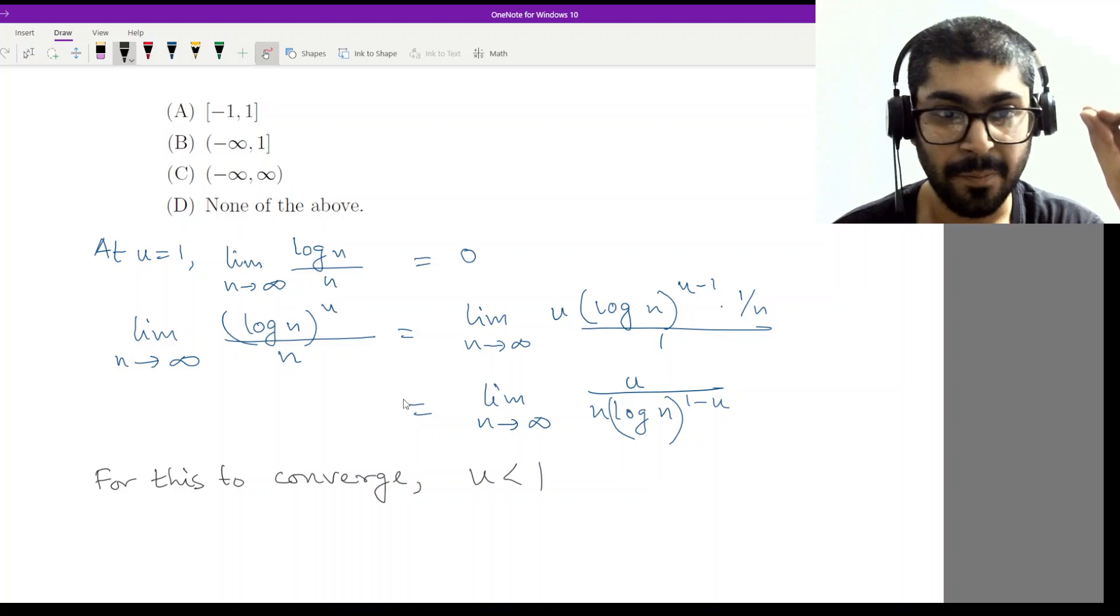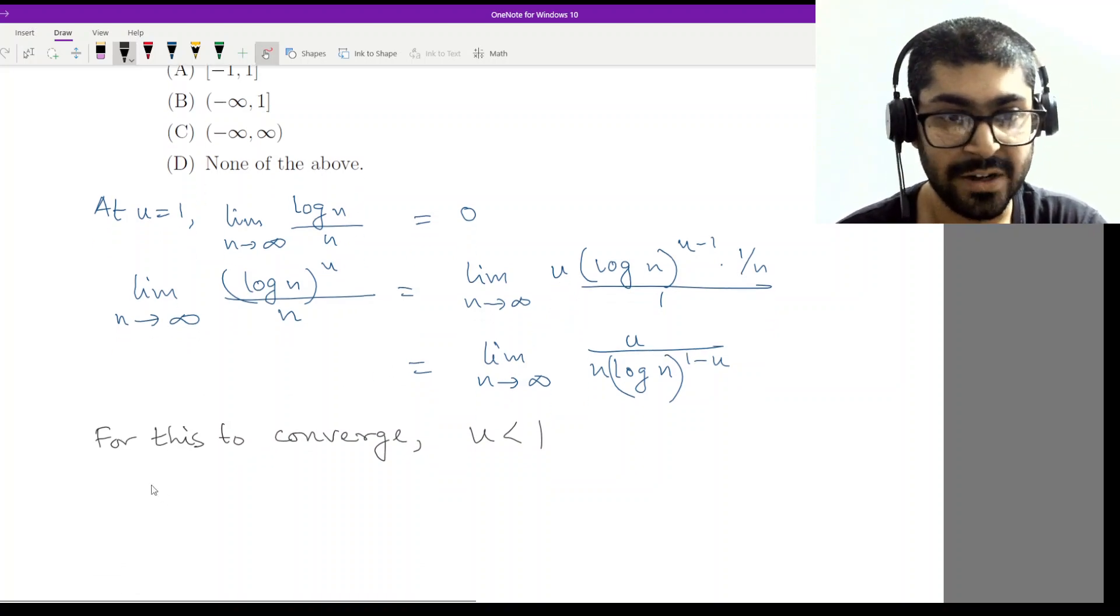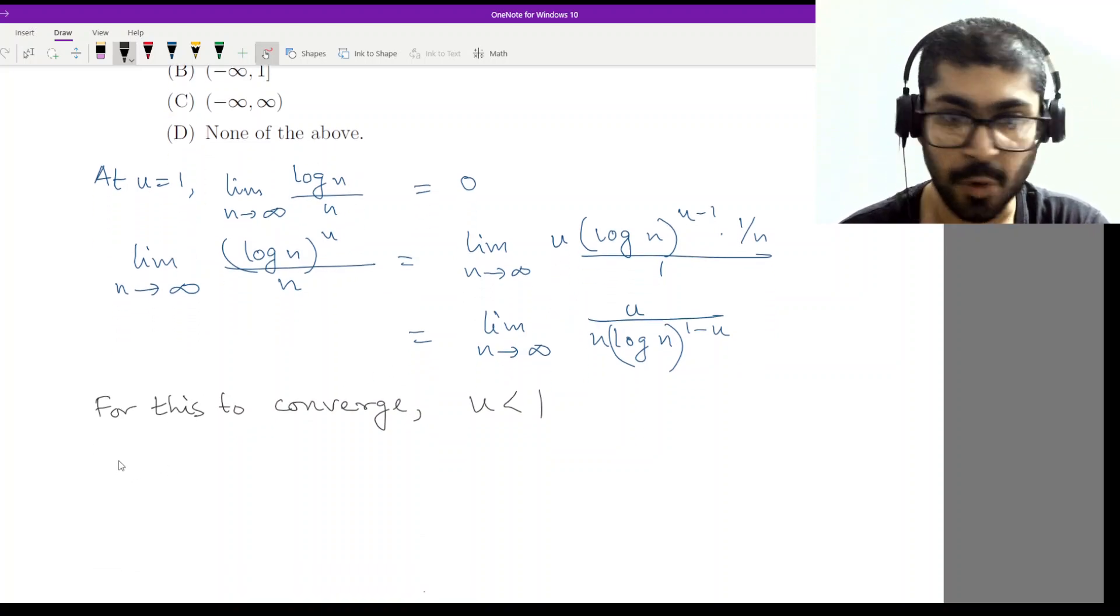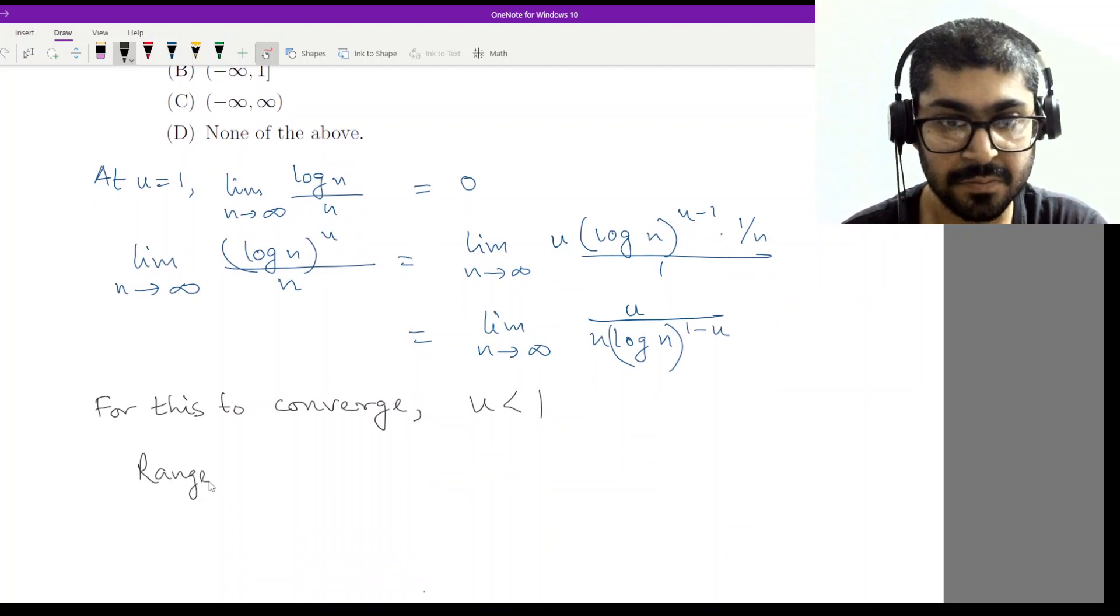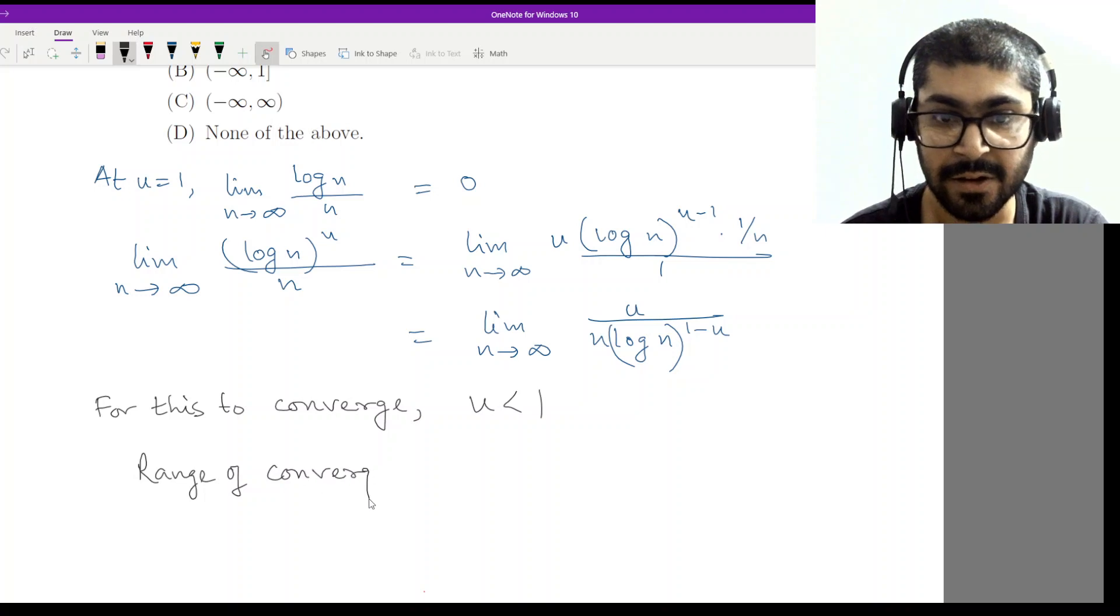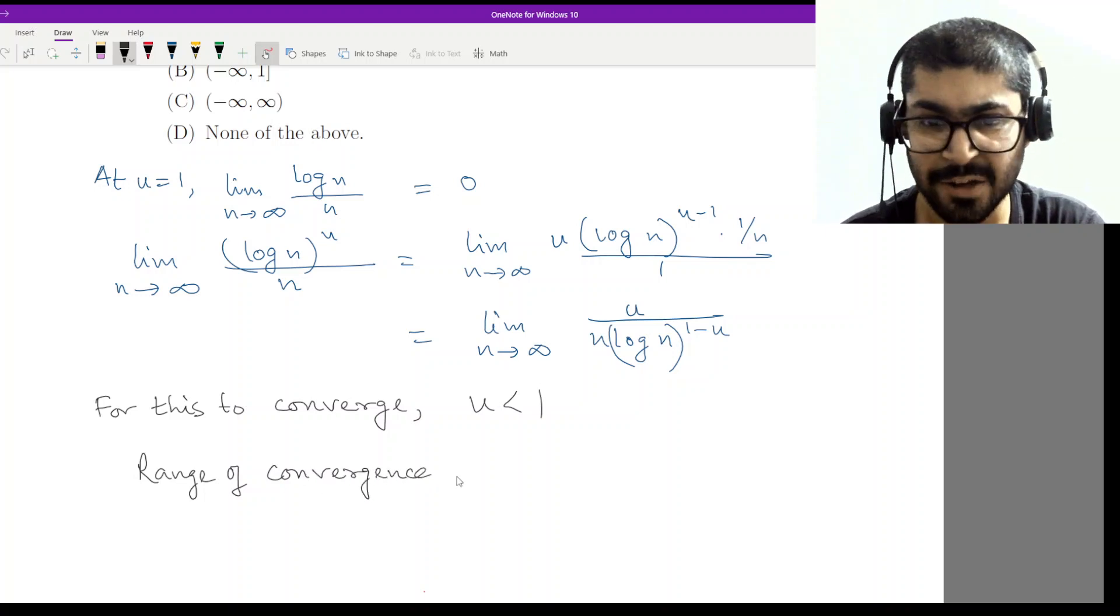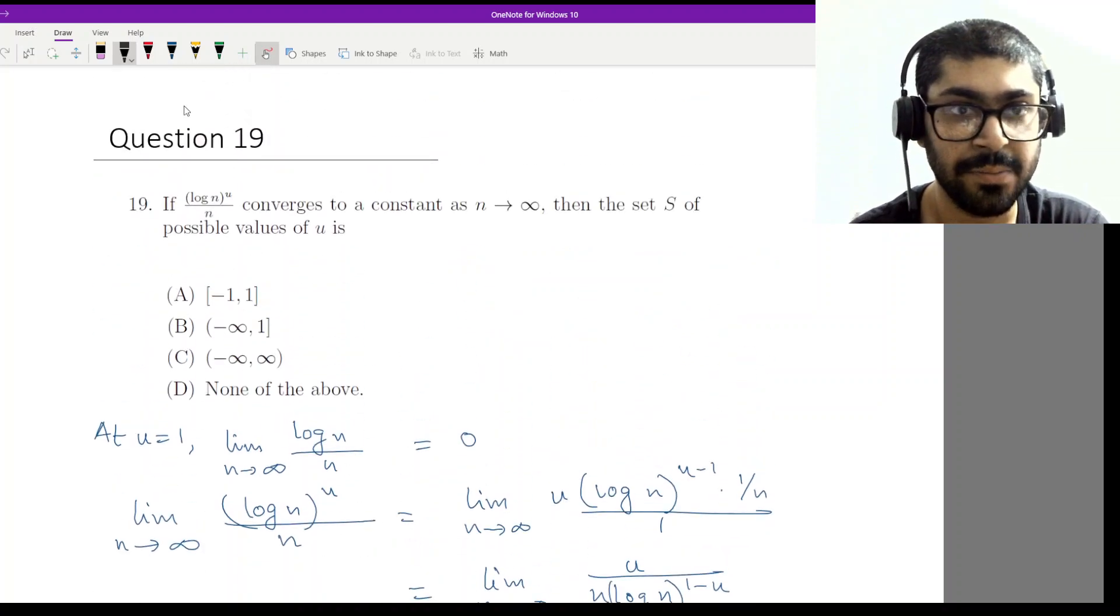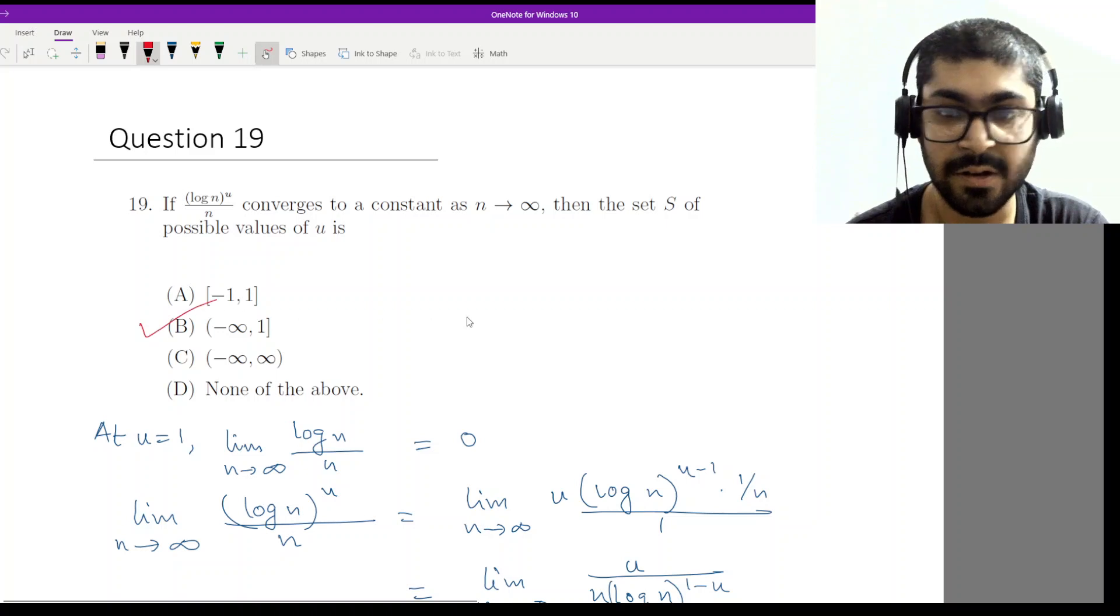Now at u equal to 1, we had a convergence and we have a convergence for u less than 1. So what is the total range for convergence? This will be u is less than 1. So minus infinity to 1, union 1. Now this will be minus infinity, 1 closed. Where is this option? This is option B.